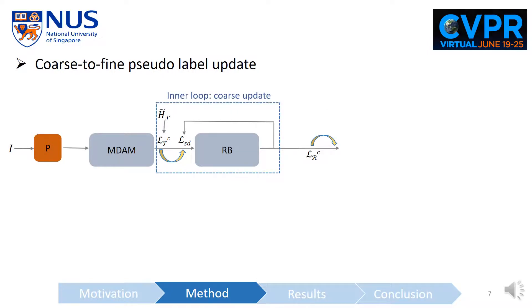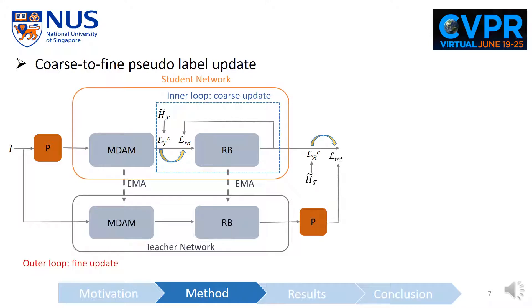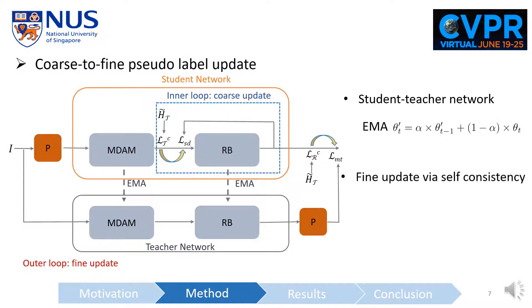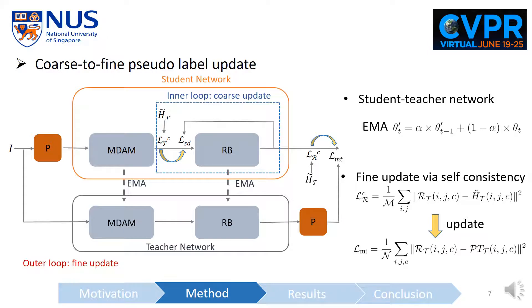Adding this inner loop for the coarse update, we further add an outer loop for the fine update. The outer loop is a student-teacher network where the weights of the teacher network are updated with EMA. The fine update is based on a self-consistency loss: we add random perturbations to the input of both branches and then enforce consistency between them, replacing the pseudo label-based loss with this self-consistency loss.